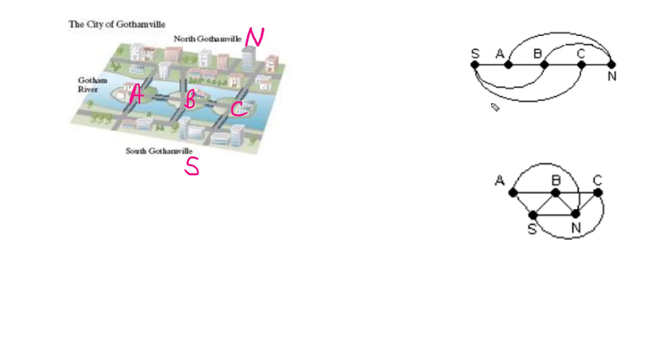I can look at this and automatically tell you this one's wrong. Do you know why? You're like, no, that's why I'm listening to this video. This is showing me that S is connecting directly to north Gothamville, and it's not. It's going through an actual bridge to an island.